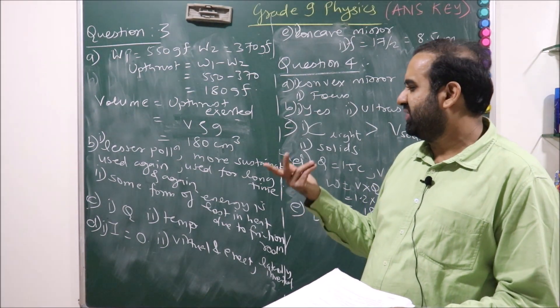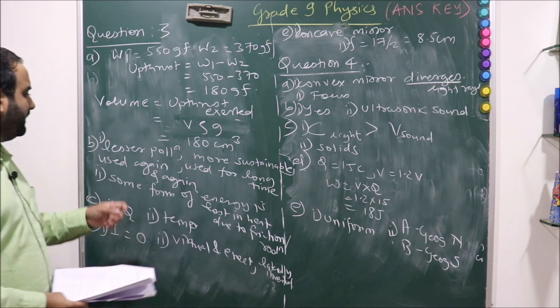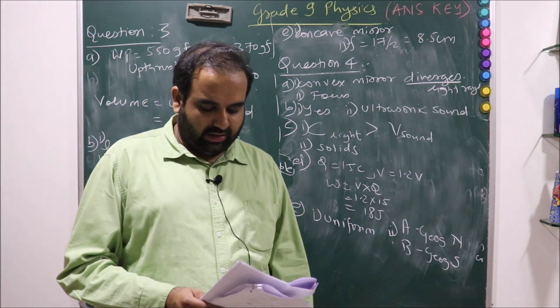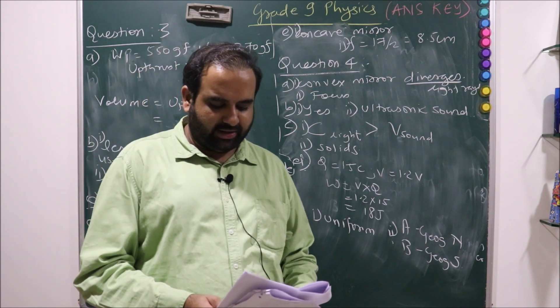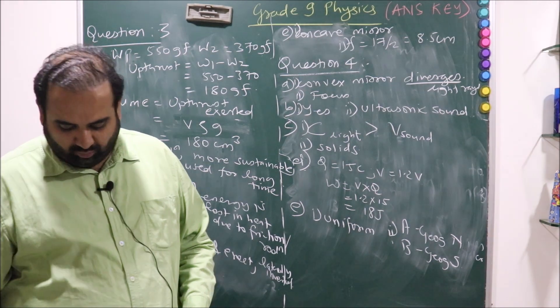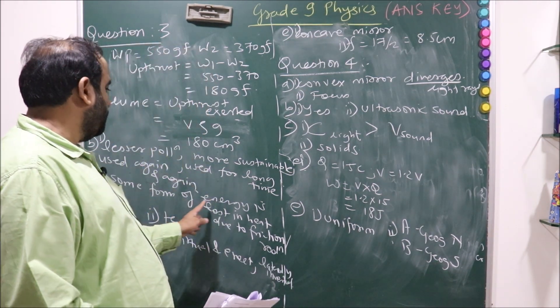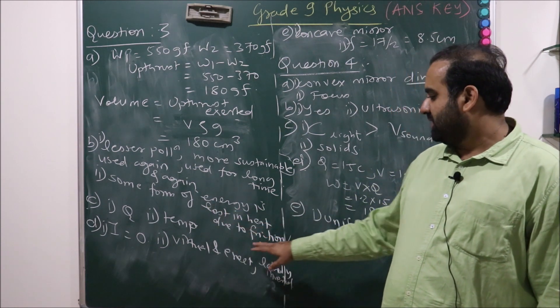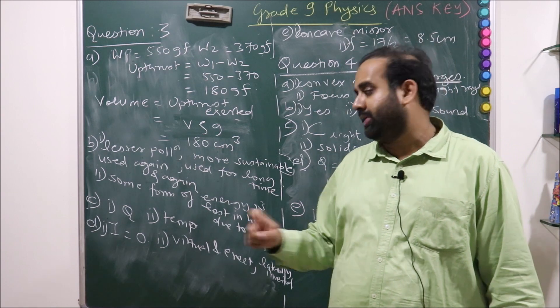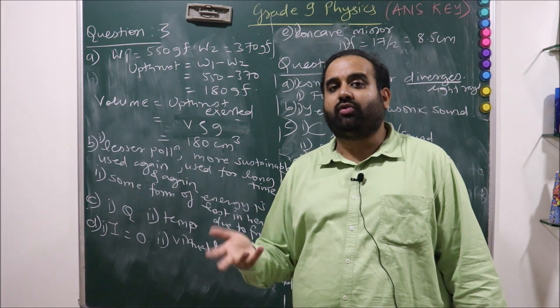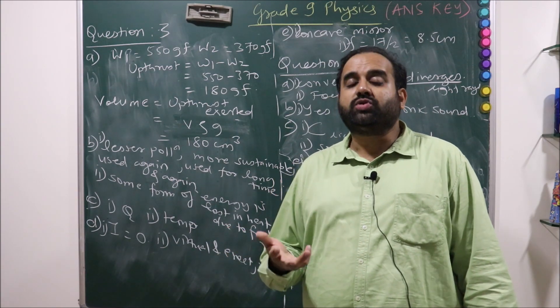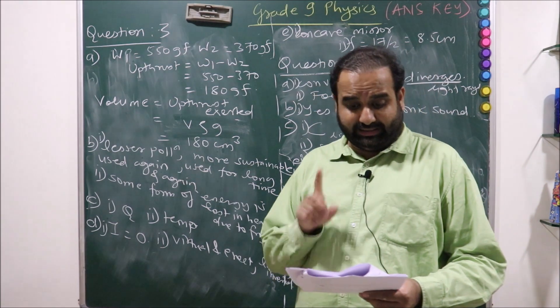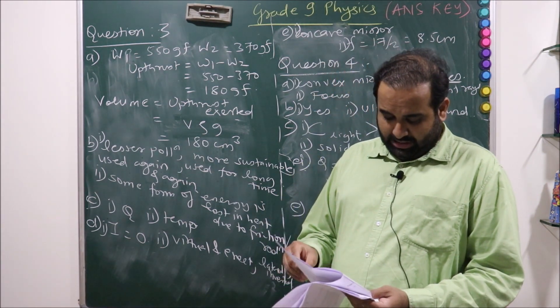State one advantage of the renewable source of energy. Very simple. You can write anything: less pollution, more sustainable, can be used again and again, used for long time. So many are there. According to the law of thermodynamics, no energy transfer is 100 percent efficient. Why? Because always some form of energy will be lost to the surroundings. This is the second law of thermodynamics. Some part of energy will always be lost due to the friction or radiation. It's very important if you just write it is lost into some unuseful form, then it will not be of any use. You'll have to mention this word friction over there, then only you will get that one mark.